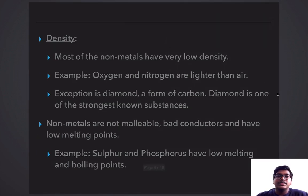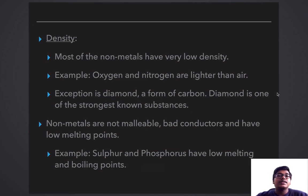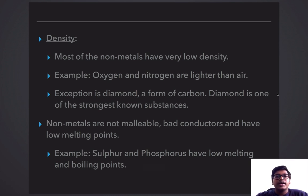Now let's talk about density. The density of Non-Metals is very low, except for diamond, which is a form of carbon. For example, oxygen and nitrogen are very light. Non-Metals are not malleable. They are bad conductors, and their melting points are very low — for example, sulfur and phosphorus.